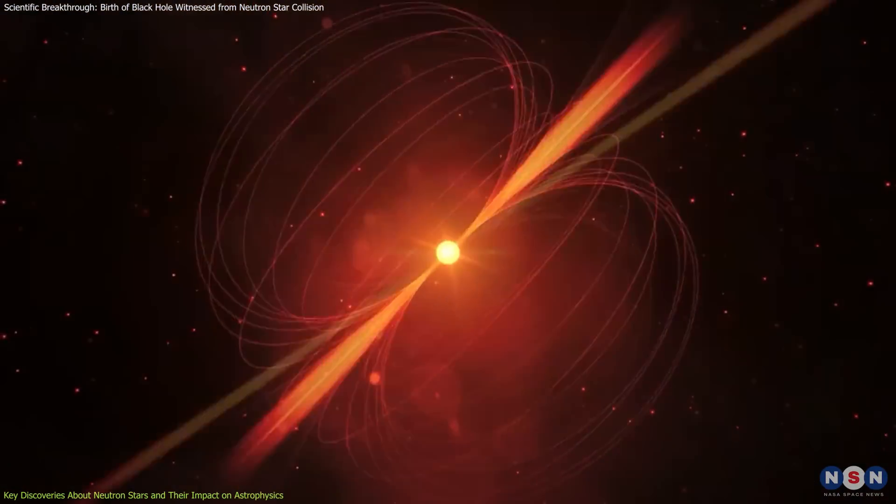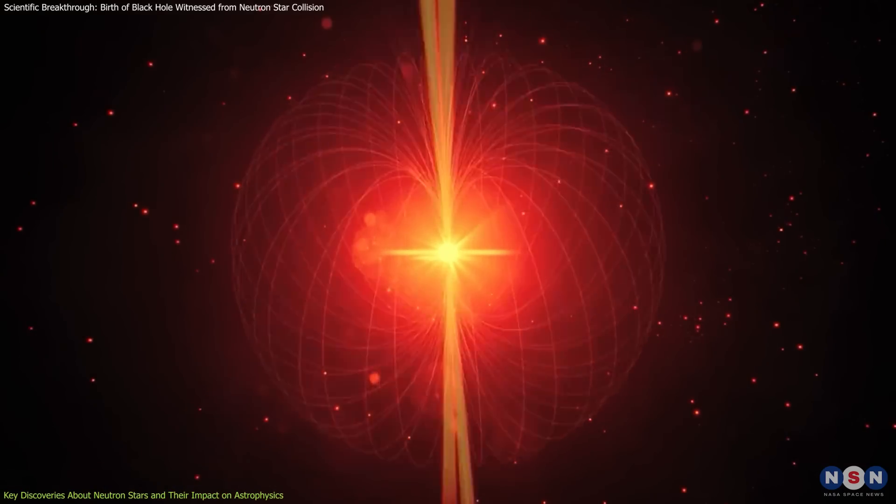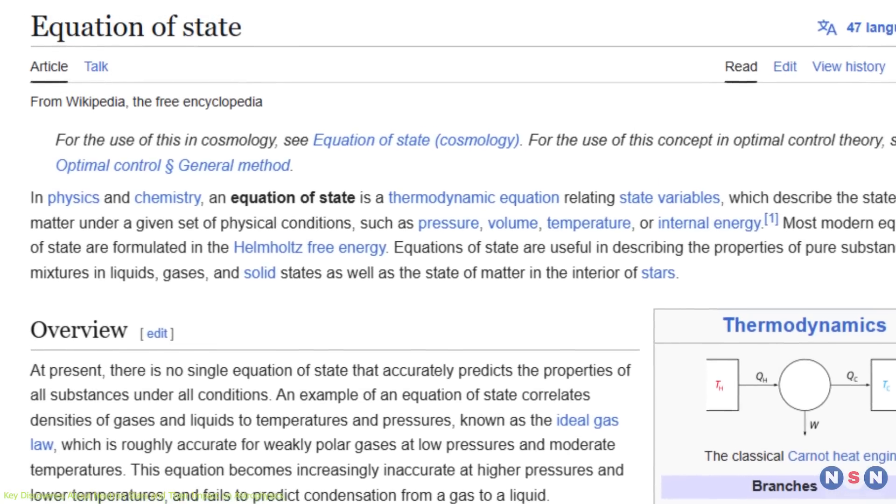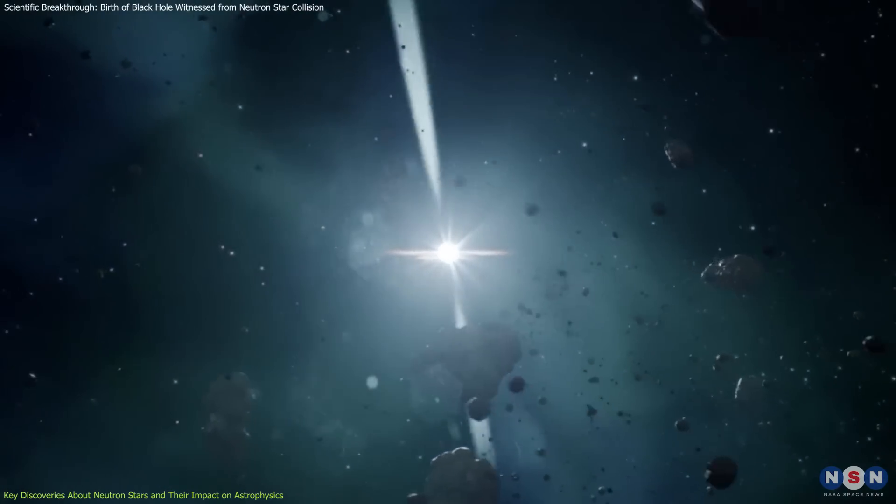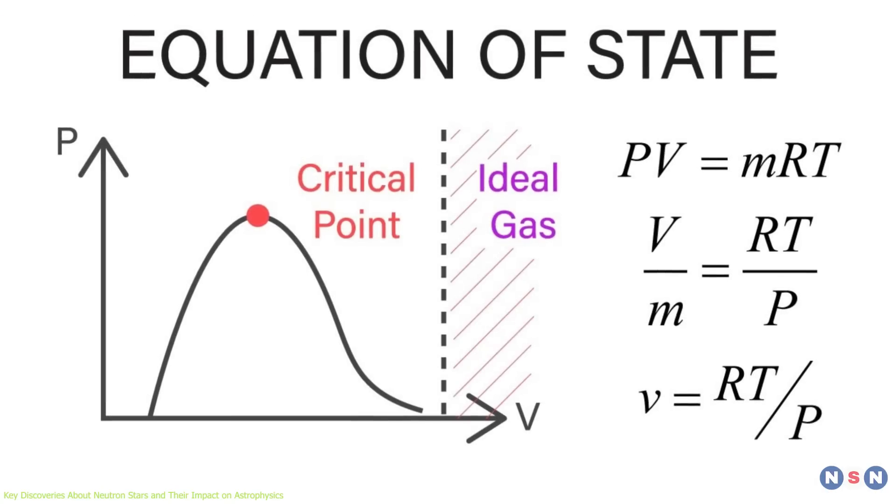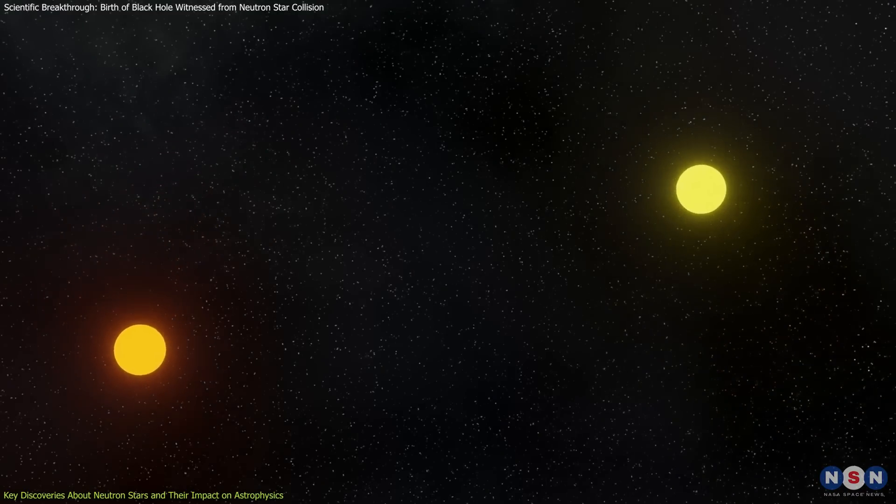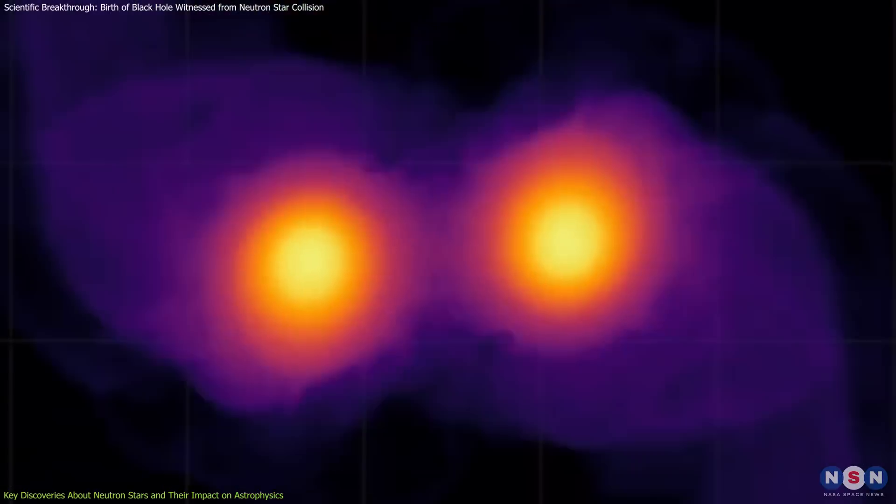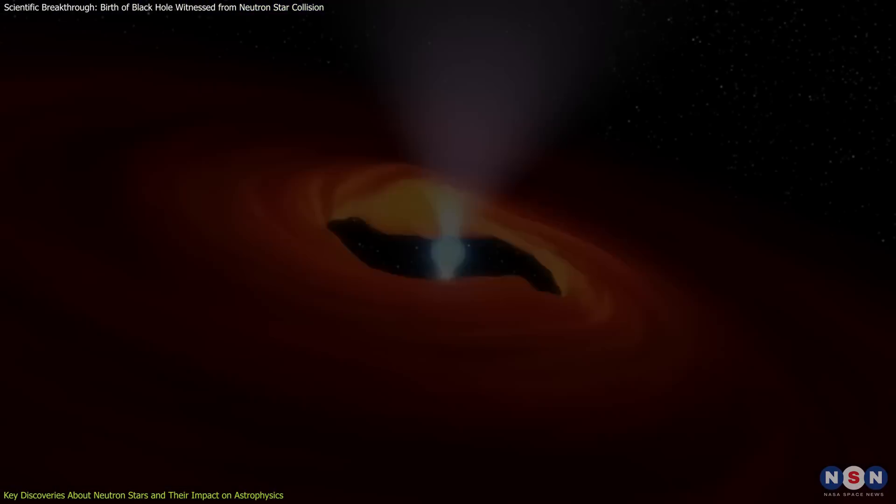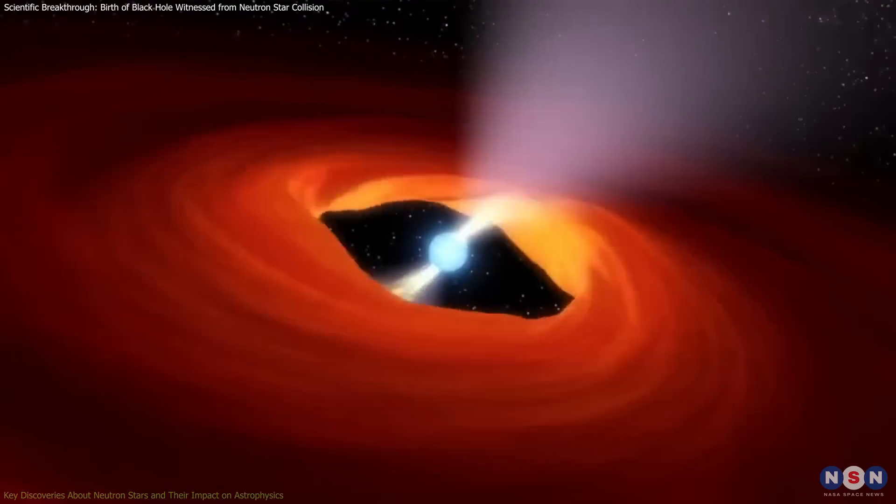One of the biggest mysteries surrounding neutron stars is how matter behaves under such extreme densities, a phenomenon known as the equation of state. Each observation of neutron star mergers and individual neutron star characteristics offers clues about this behavior, even though the exact nature of this equation remains unknown. By studying variations in neutron star size, mass, and spin rates, scientists have gradually constrained possible models, each discovery adding to our understanding of matter under conditions that cannot be replicated on Earth.